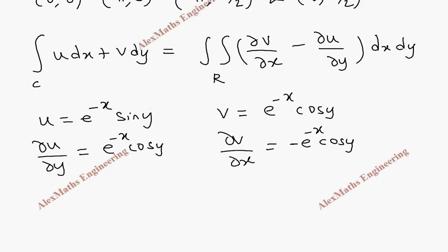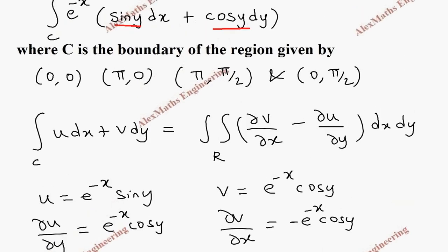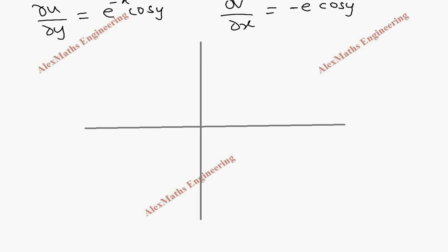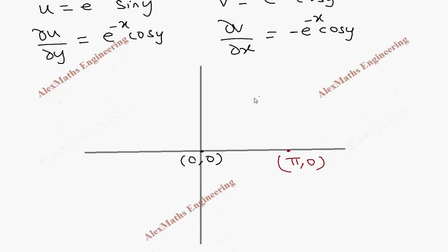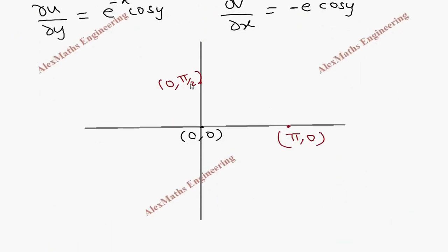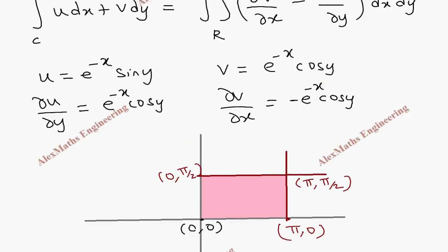Now we consider a small diagram using the given boundaries: (0, 0), (π, 0), (0, π/2), and (π, π/2). On the horizontal and vertical axes: (0, 0) is the origin, (π, 0) is on the horizontal axis, (0, π/2) is on the vertical axis, and (π, π/2) is the meeting point in the corner. We take a horizontal line and a vertical line, and the region under consideration is this rectangle.